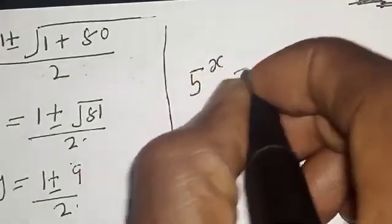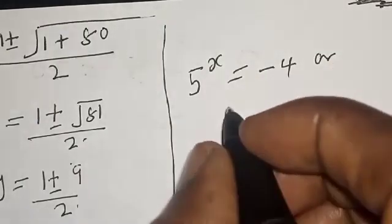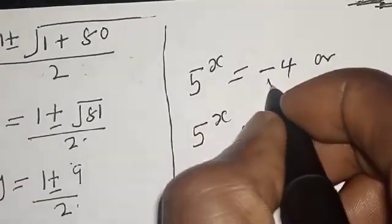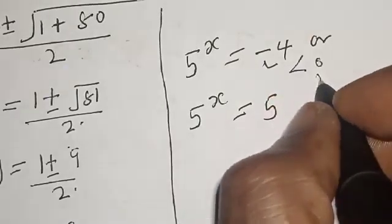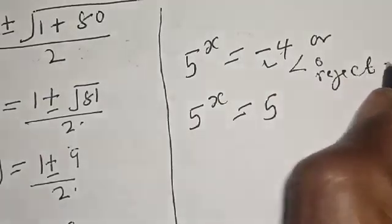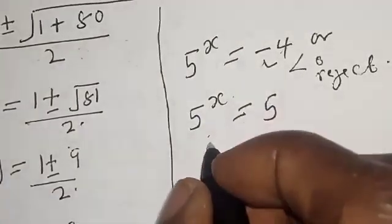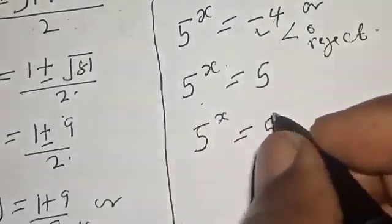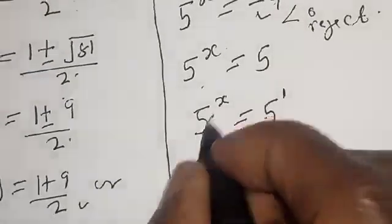So 5 raised to power s equals negative 4 or 5 raised to power s equals 5. We reject 5 raised to power s equals negative 4 because it is less than 0 — 5 raised to power s cannot take a negative value. The true solution is 5 raised to power s equals 5, which is the same as 5 raised to power 1. Since the bases are equal, s equals 1. That is our final answer.